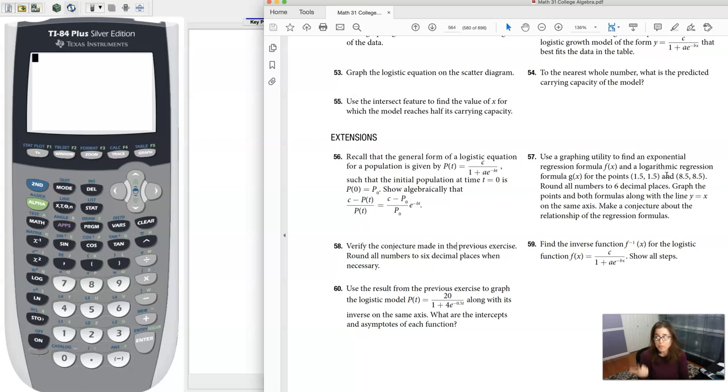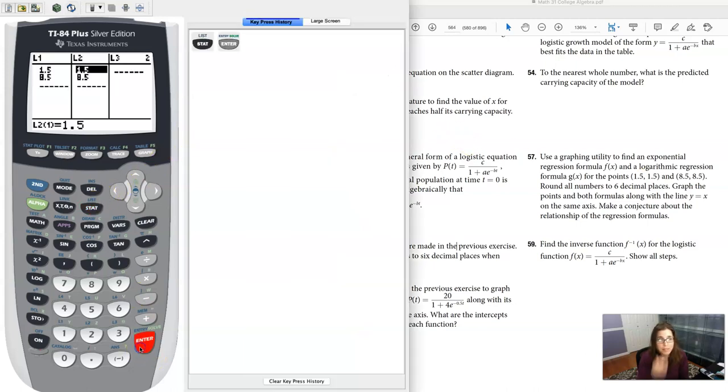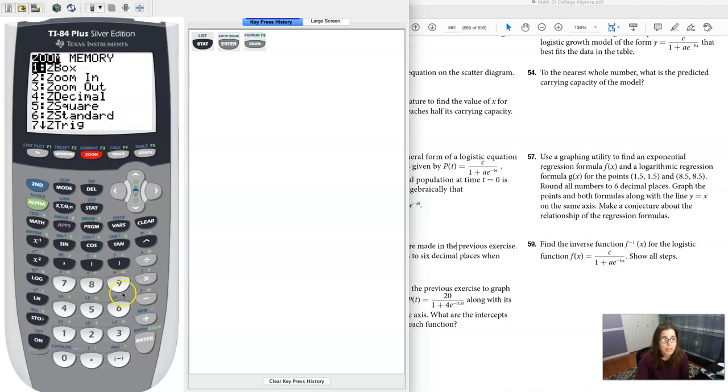They wanted one of them to be exponential and one of them to be logarithmic, so I put my data into my lists like that. I'm gonna hit zoom 9 and all I see is two ordered pairs.